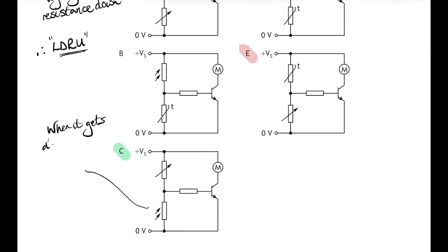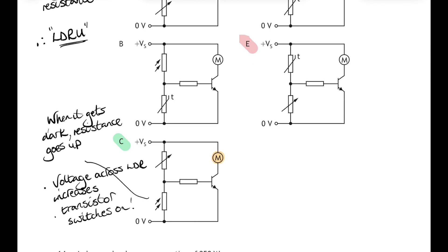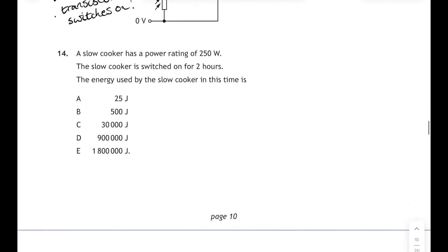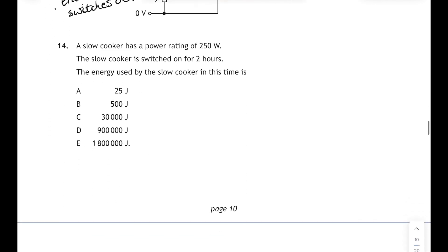So we want the LDR in the bottom position in the circuit, so that is answer C. And when the LDR is in that position, when it gets dark, its resistance goes up, so it will get more of a share of the voltage. So the voltage across the LDR increases, that makes the transistor conduct, and that turns on the motor.